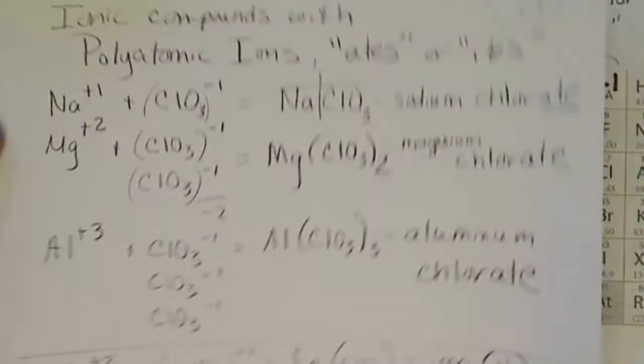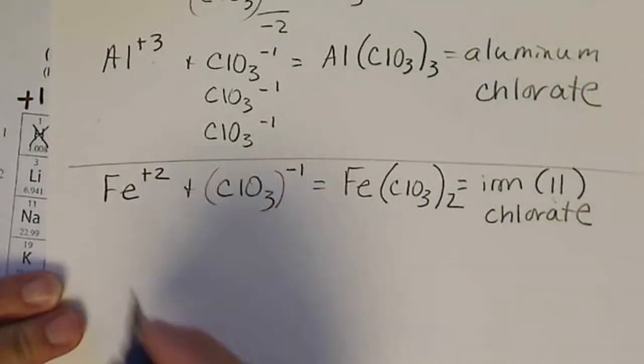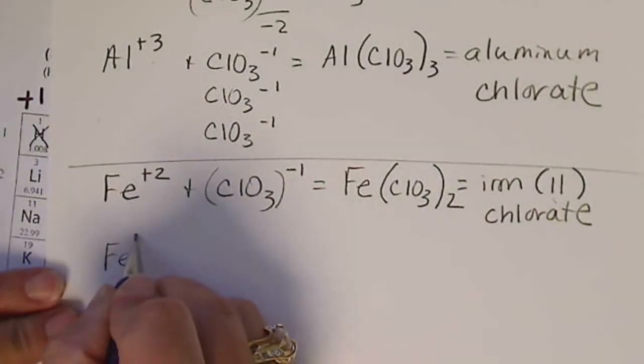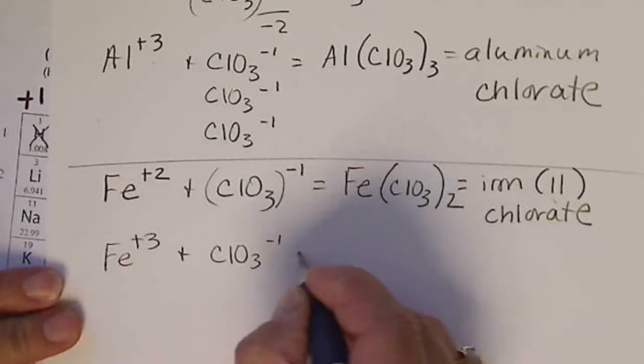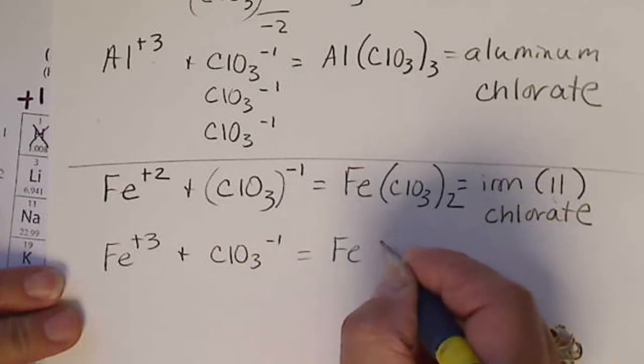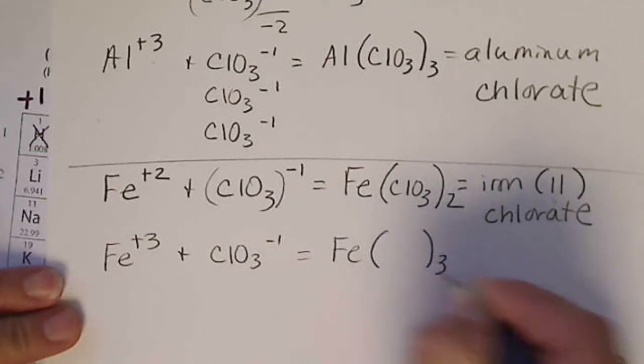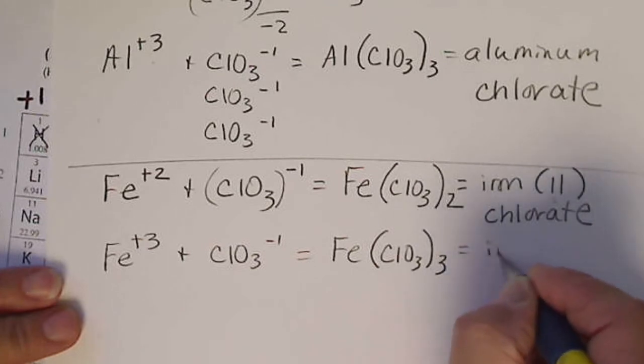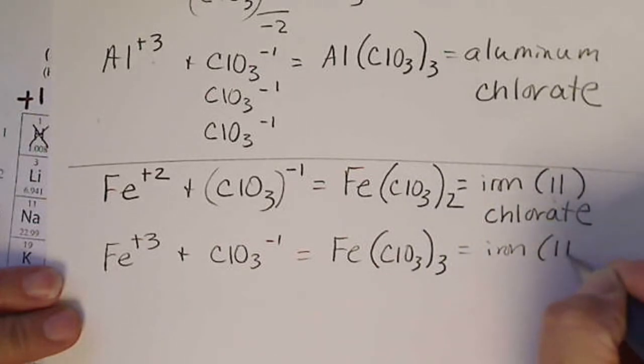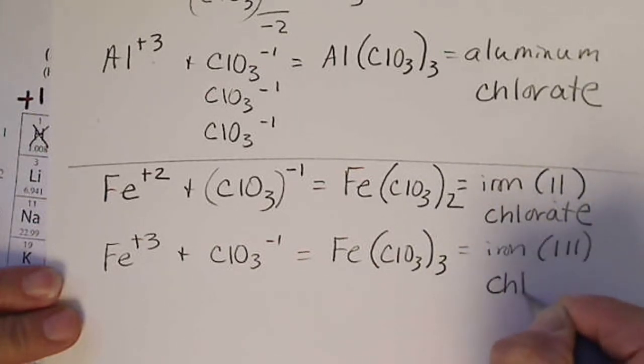So we could have iron three with chlorate. So iron plus three is common. So ClO3 minus one, that would require three of these things called chlorate. And this would be iron Roman number three, chlorate.